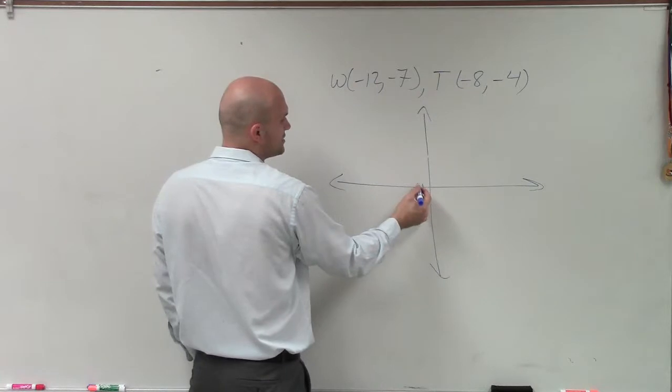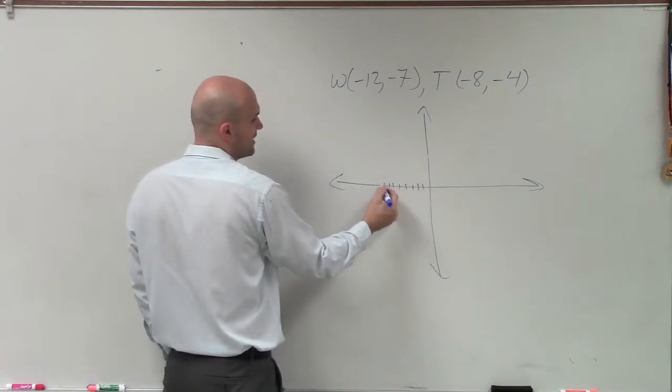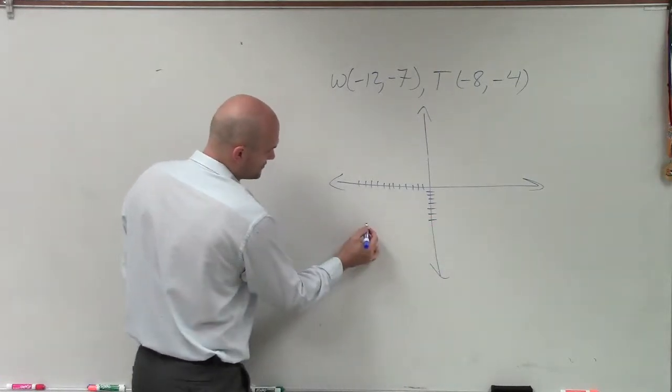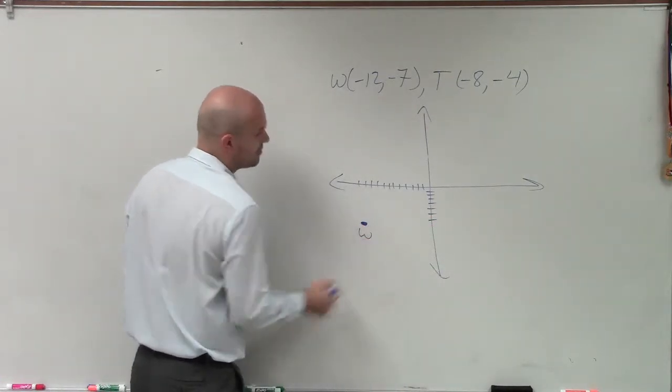So look at negative 12, 7. Count 1, 2, 3, 4, 5, 6, 7, 8, 9, 10, 11, 12 and then 1, 2, 3, 4, 5, 6, 7. So negative 12, 7 would be right there. That's what we call point W.